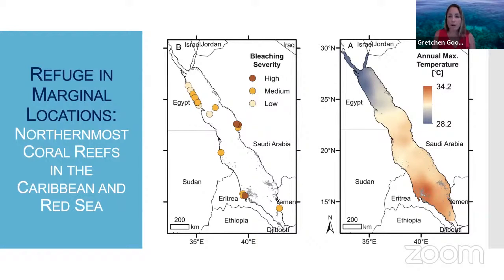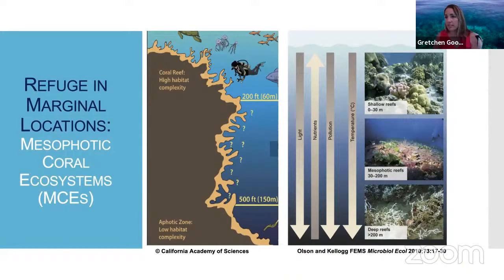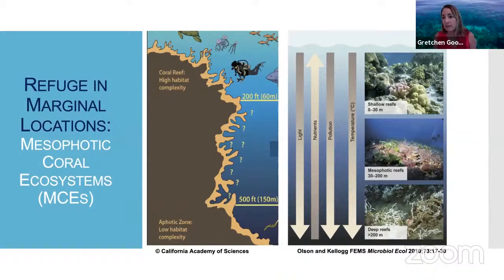Areas of refuge can also exist across bathymetric ranges, not just latitudinal ranges. We're referring to deep reefs or mesophotic coral ecosystems as potentially serving the same role as a refuge from thermal stress. Corals extend along the fore reef zone into mesophotic regions where light becomes limited, but stressors such as pollution and high temperatures are also mitigated with depth. Many researchers have suggested that mesophotic reefs in the range of 30 to 200 meters depth could serve as a refuge for the survival and persistence of coral biodiversity.